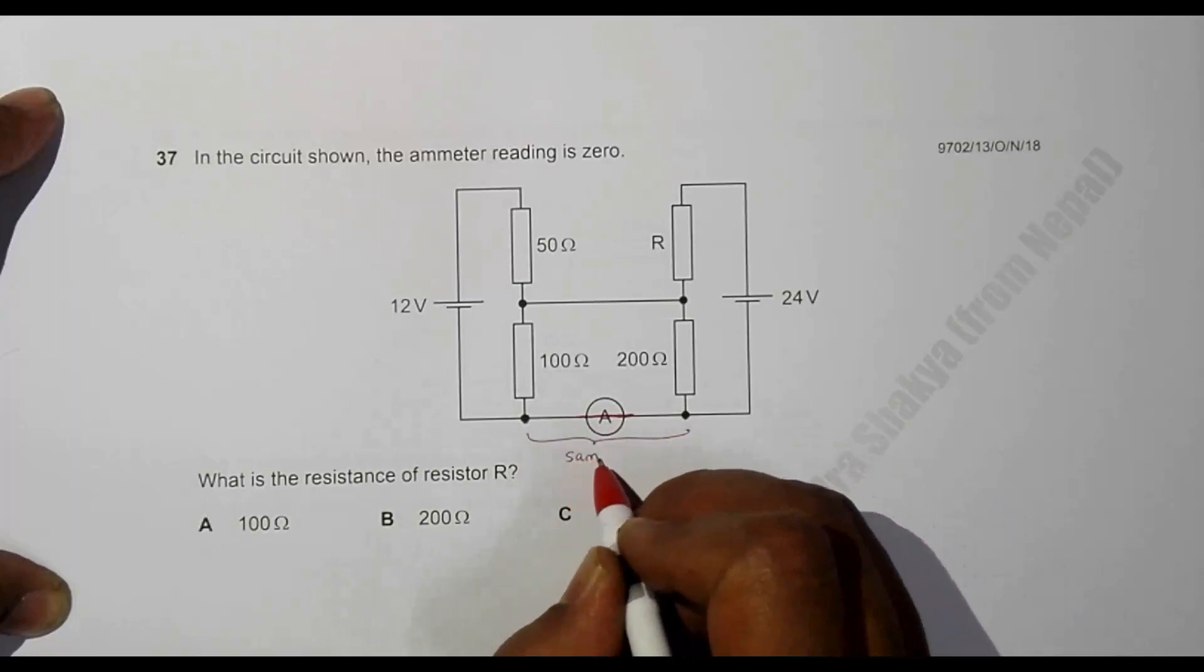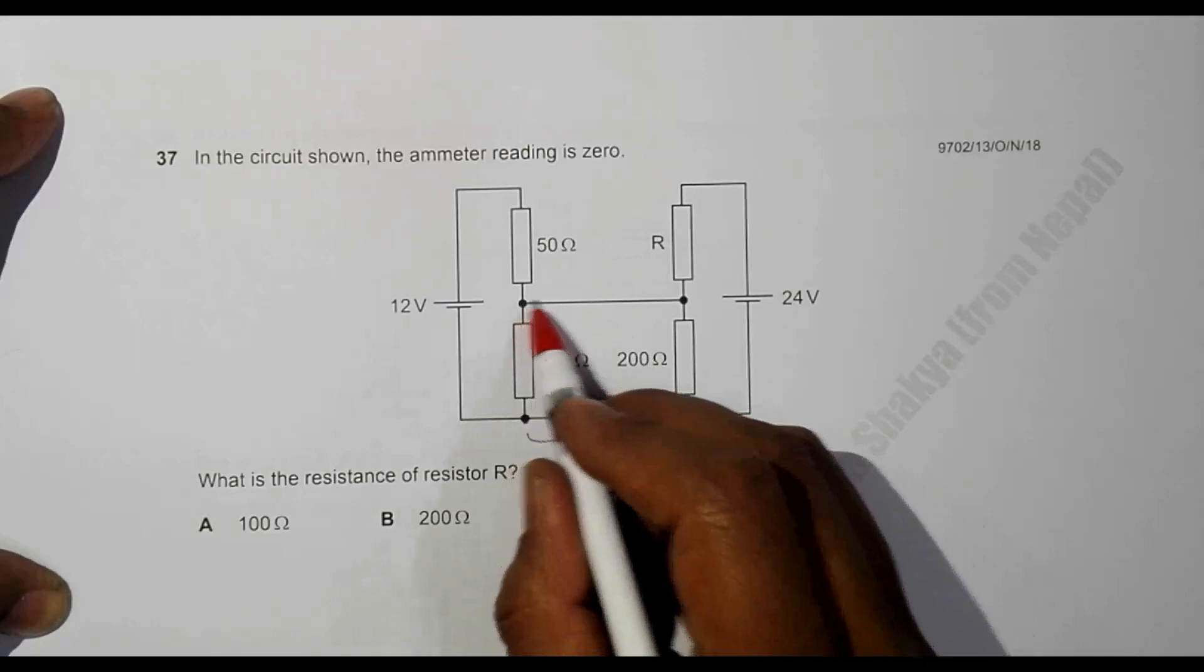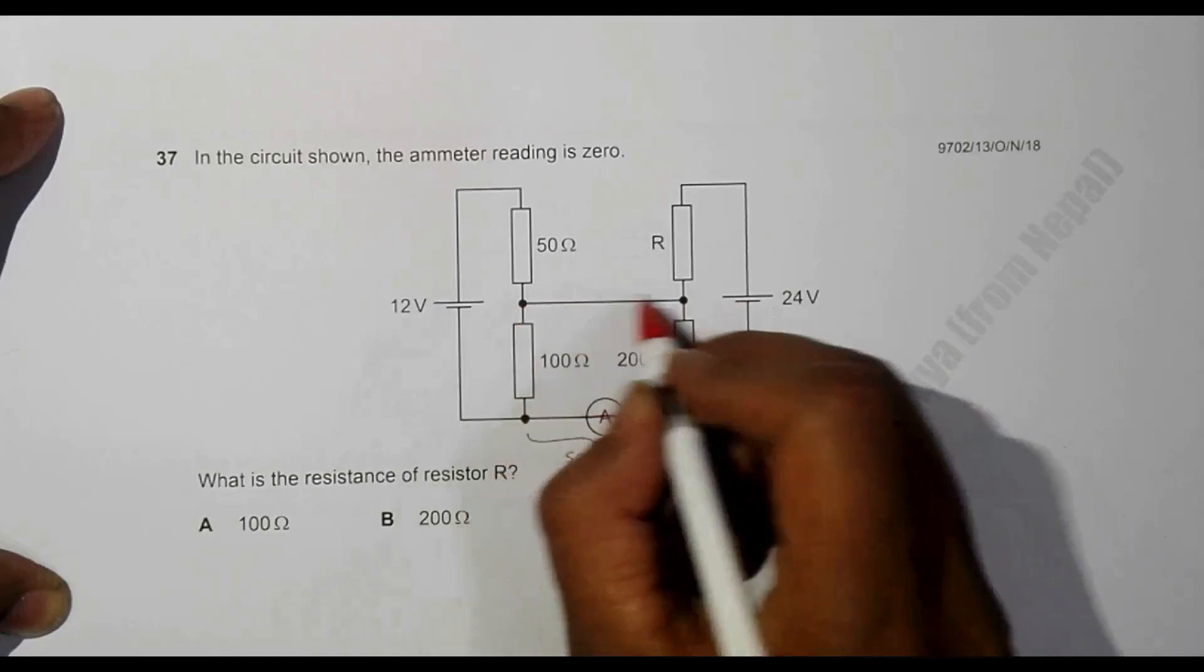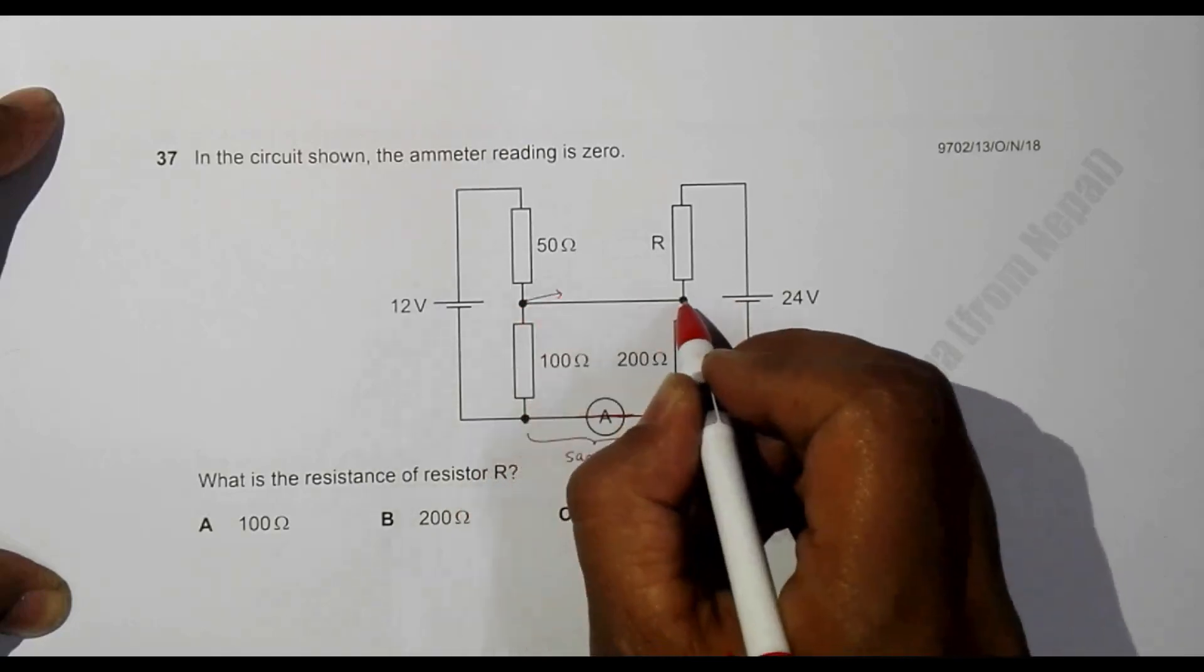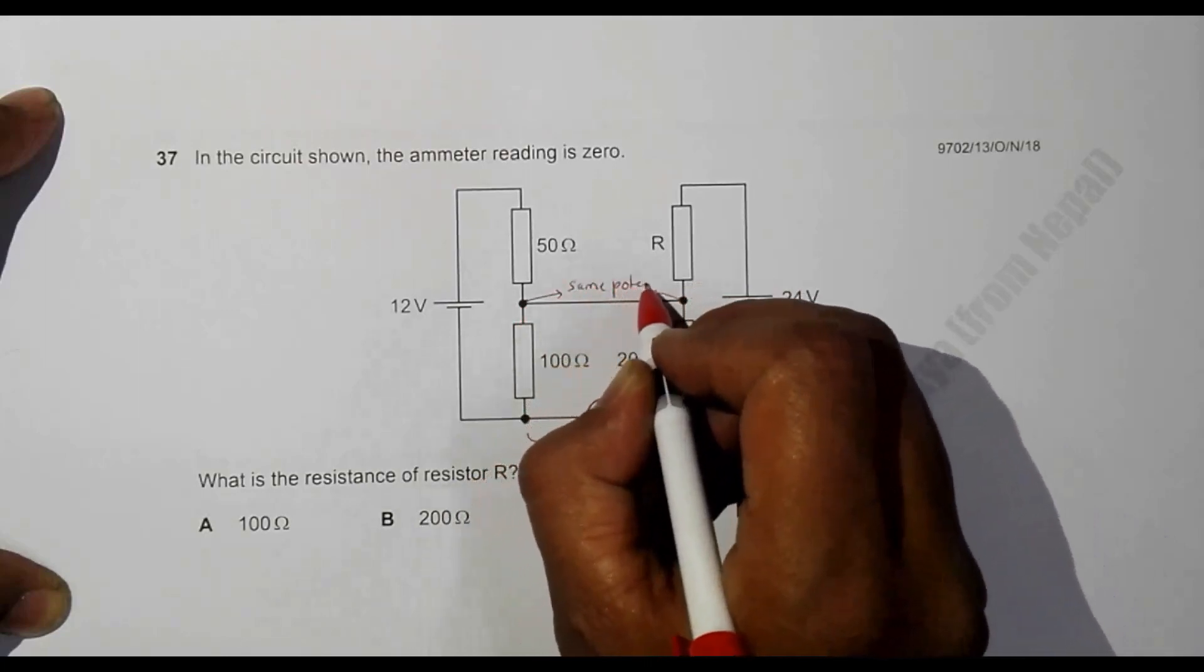That means this point and this point are at the same potential. Again, we have a connection here, so these two points also are at the same potential.